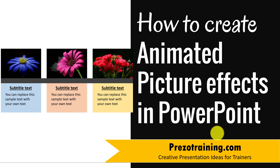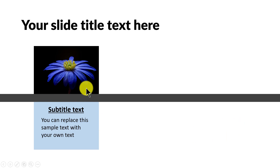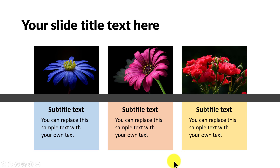The effect you will learn to create today looks like this. On a click, I have the first picture with its associated text shown, then the second picture with its text and third picture with its text. When you want to create a business presentation or a training presentation, there are tons of occasions where you would be required to show pictures with their associated explanation to explain your points. This animated version of the slide is definitely going to impress your audience, boss and colleagues.